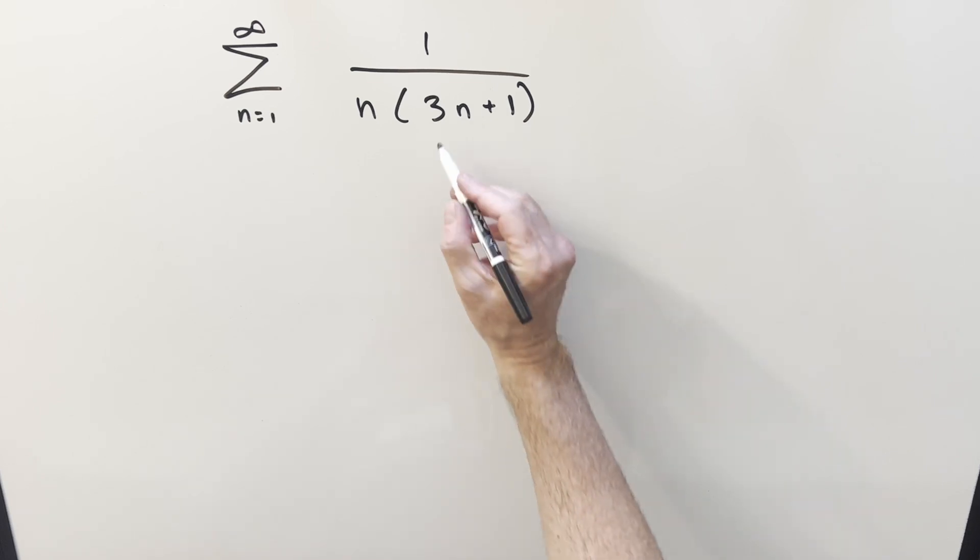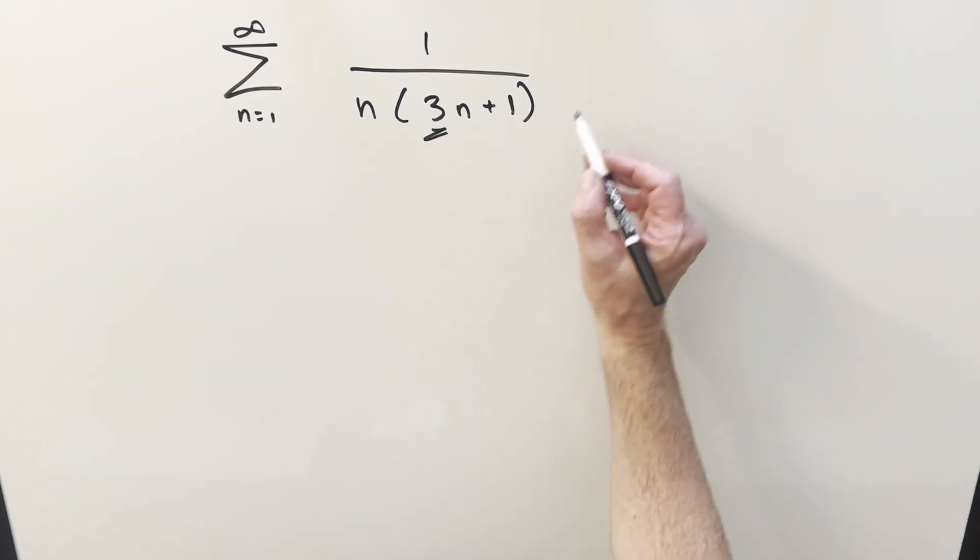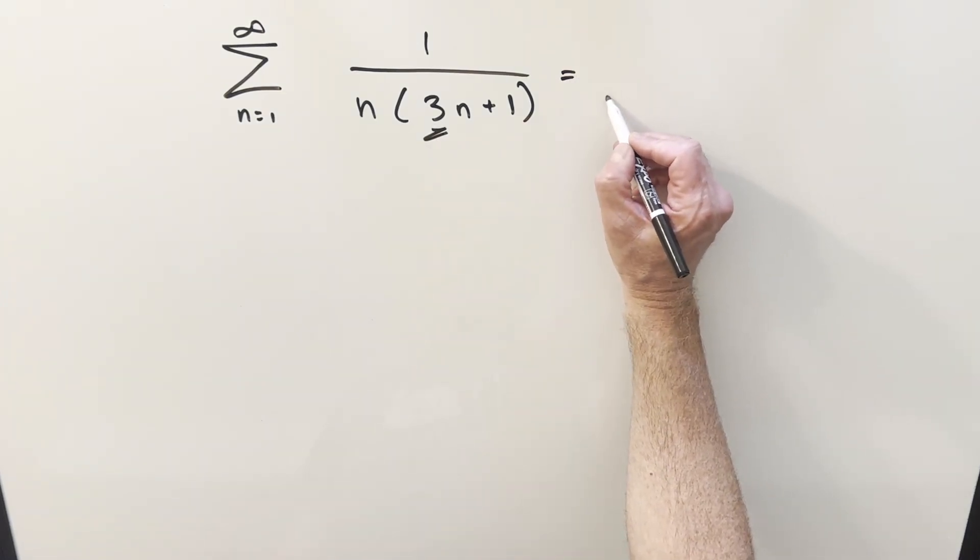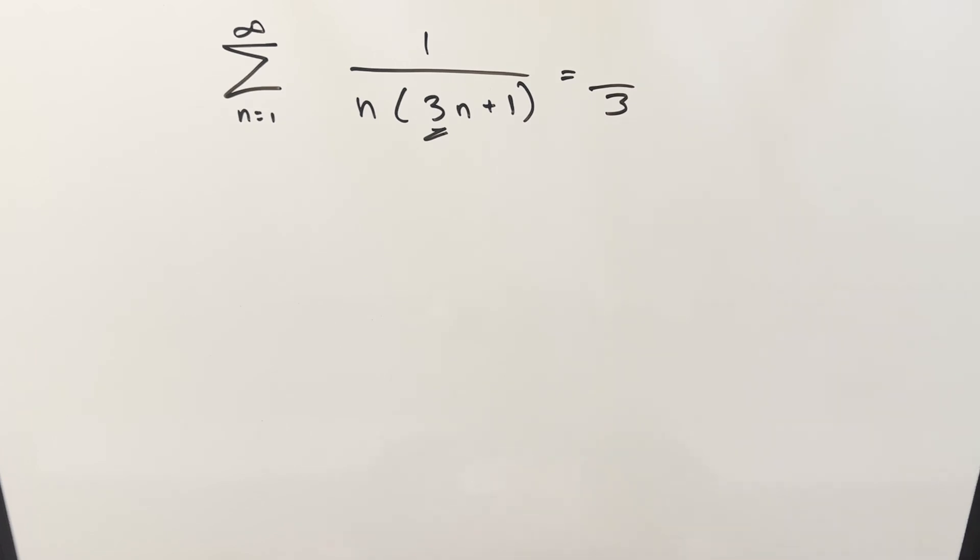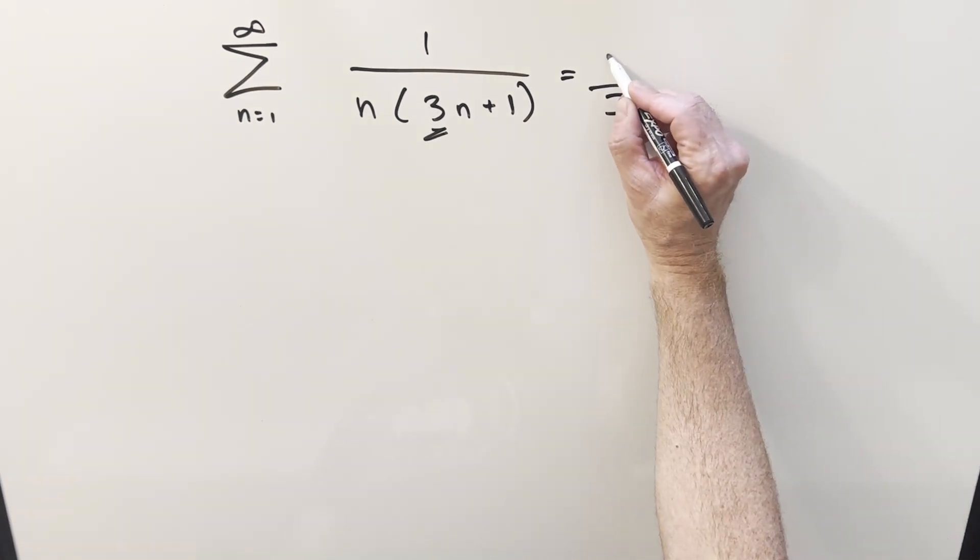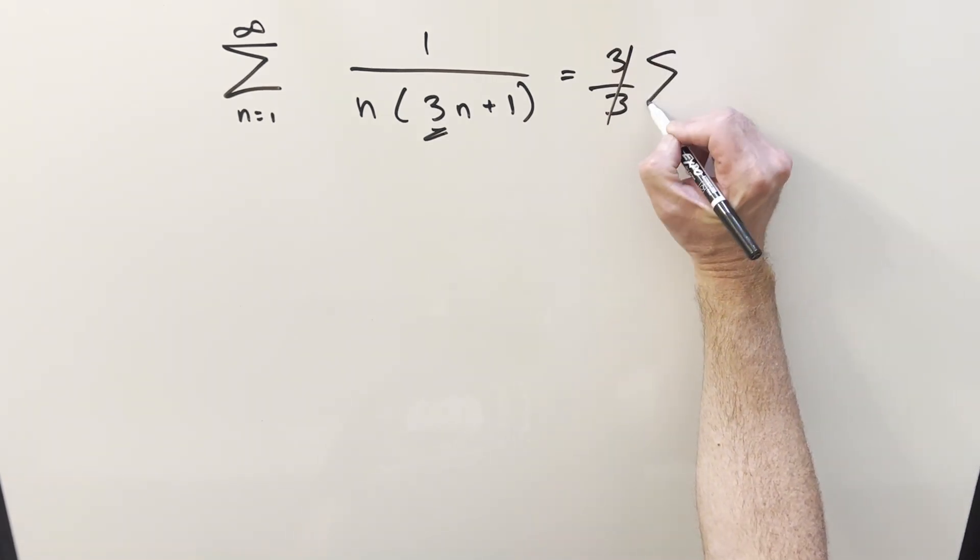But first, I don't like having this 3 here, so I'm going to rewrite it and factor a 3 out of the denominator. But then I'll also factor a 3 out of the numerator, so then this is just going to be a 1 in front.